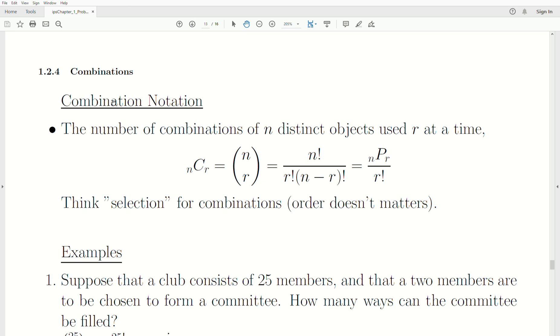The notation for combinations is this: if we take n distinct objects used r at a time, it's subscripts n and r, choose, or it could be this binomial coefficient, n choose r. Either way, it is n factorial over r factorial times n minus r factorial. Notice that this piece on the right is the permutations formula, n choose r, but we're dividing out all the extra times we count in permutations.